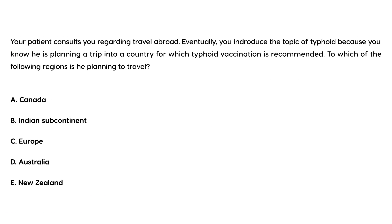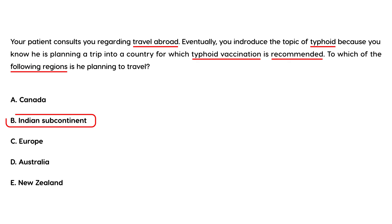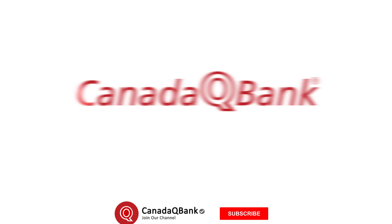Second vignette: Your patient consults you regarding traveling abroad. You introduce the topic of typhoid because you know he is planning a trip to a country for which typhoid vaccine is recommended. The answer that screams out is choice B, because typhoid is definitely endemic in India.